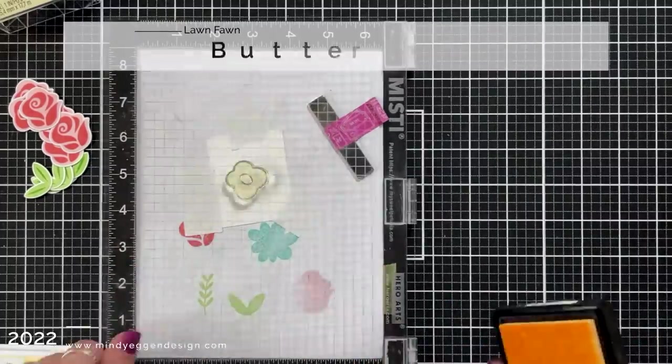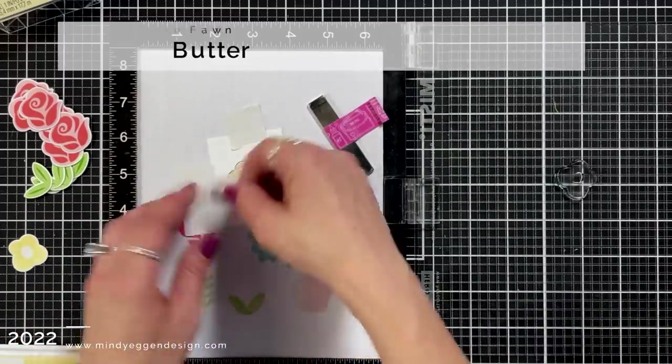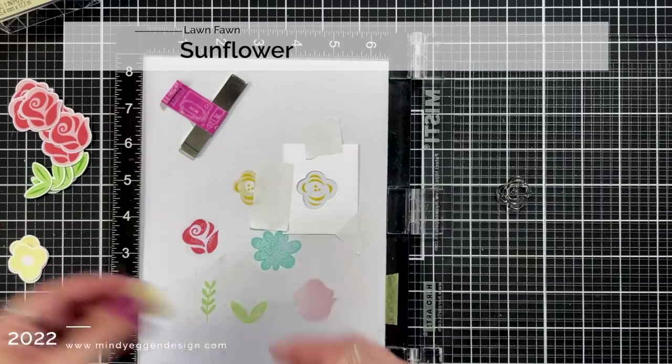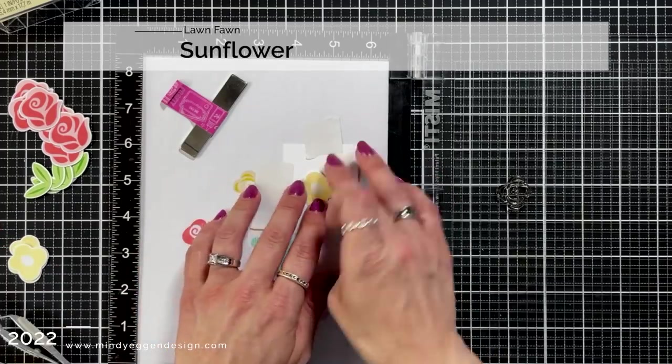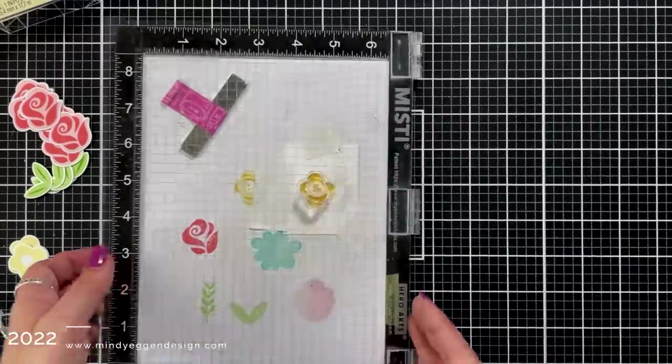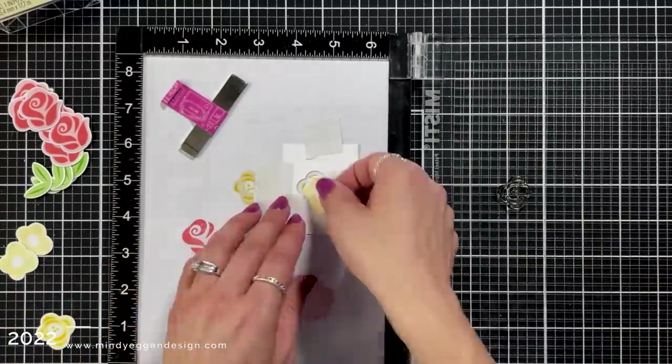So for this last flower here this one's a little bit smaller I started by stamping that base layer in butter ink and then I'm going to bring in the second layer of this image and stamp it in sunflower ink. Once I have all of my images stamped out I'm going to work on the rest of the elements of my card starting with creating the basket for my flowers.